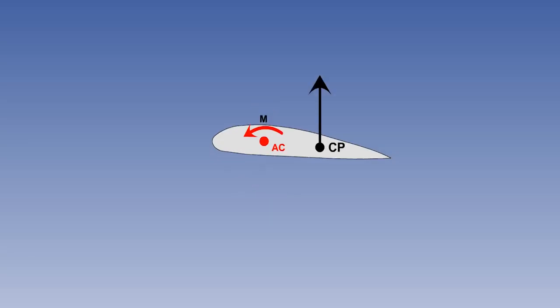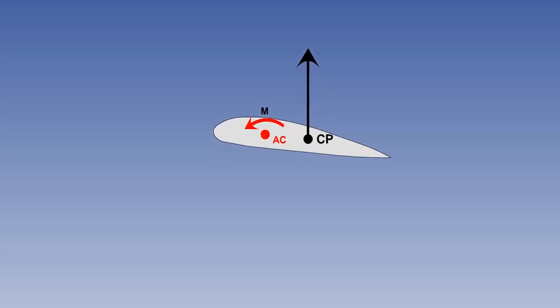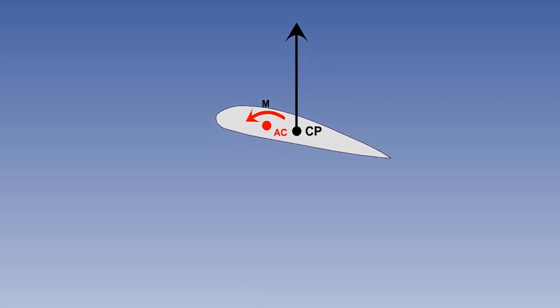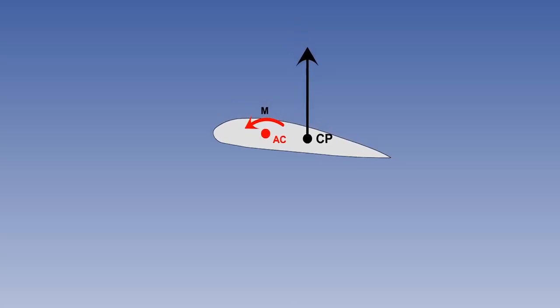There is a nose-down pitching moment about the AC, which is a product of the lift force at the CP and the arm between the CP and the AC. Since an increase in alpha will not only increase the lift force but also shorten the lever arm as the CP moves forward towards the AC, the moment about the AC remains the same at any angle of attack within the normal flight range.